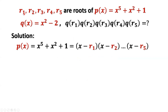Because R1 through R5 are roots of polynomial p of x, and the leading coefficient of this polynomial is 1, therefore we can rewrite p of x as x minus R1 times x minus R2, all the way through times x minus R5.